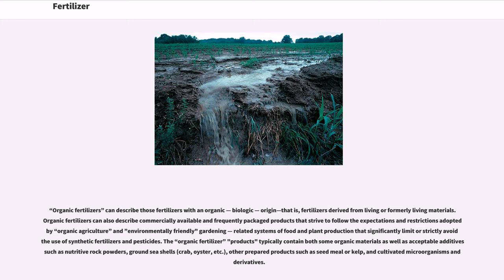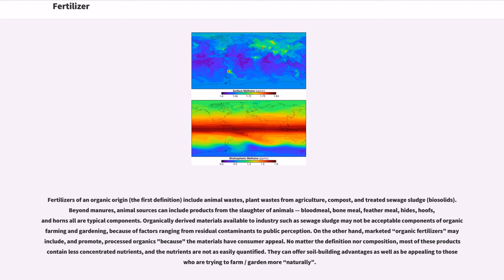Organic fertilizer products typically contain both some organic materials as well as acceptable additives such as nutritive rock powders, ground seashells (crab, oyster, etc.), other prepared products such as seed meal or kelp, and cultivated microorganisms and derivatives. Fertilizers of organic origin include animal wastes, plant wastes from agriculture, compost, and treated sewage sludge (biosolids). Beyond manures, animal sources can include products from the slaughter of animals — blood meal, bone meal, feather meal, hides, hoofs, and horns are all typical components.